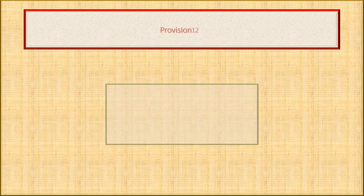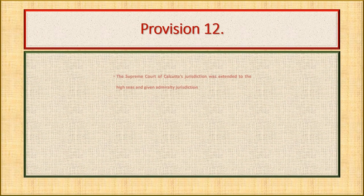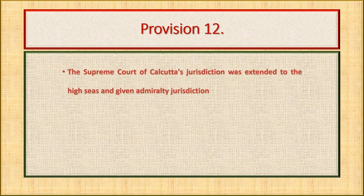Now the specifics of Provision 12: the Supreme Court of Calcutta's jurisdiction was extended to the high seas and given admiralty jurisdiction.